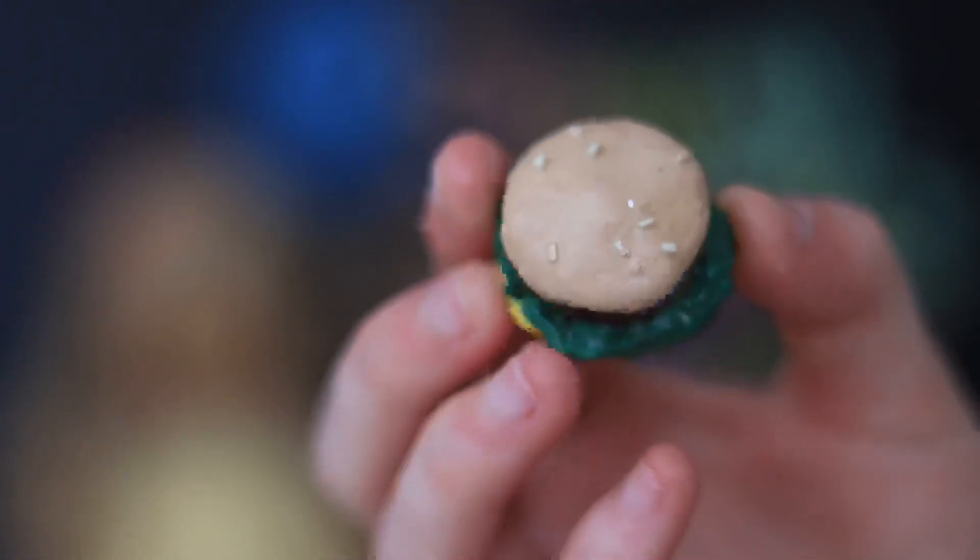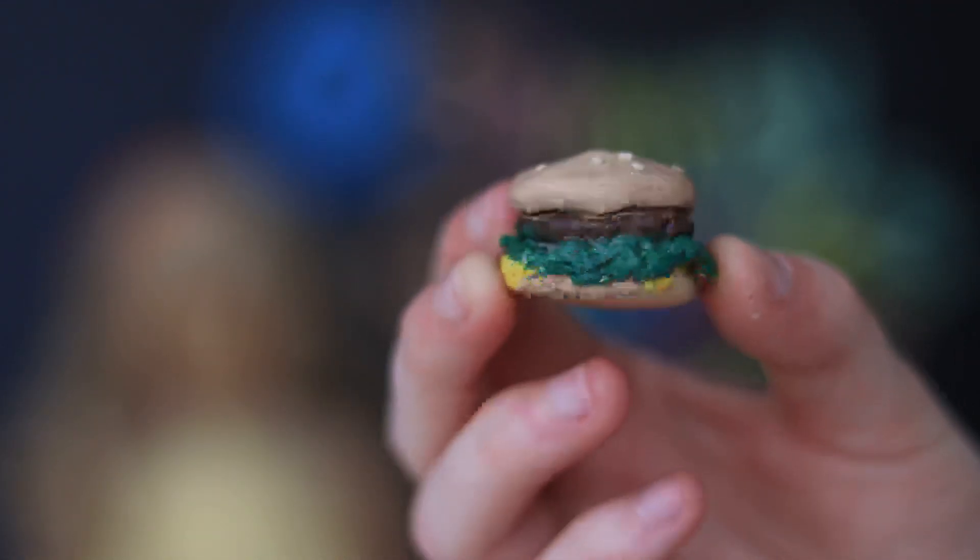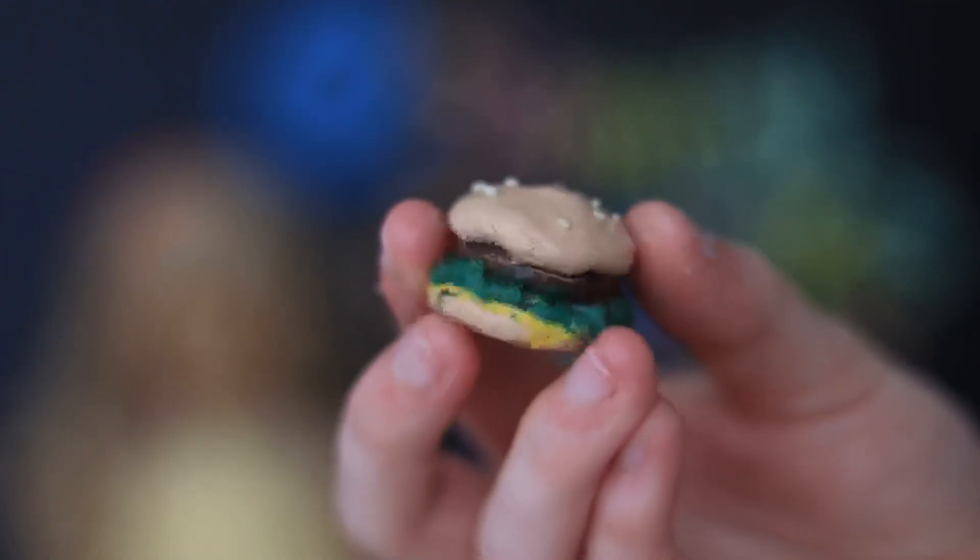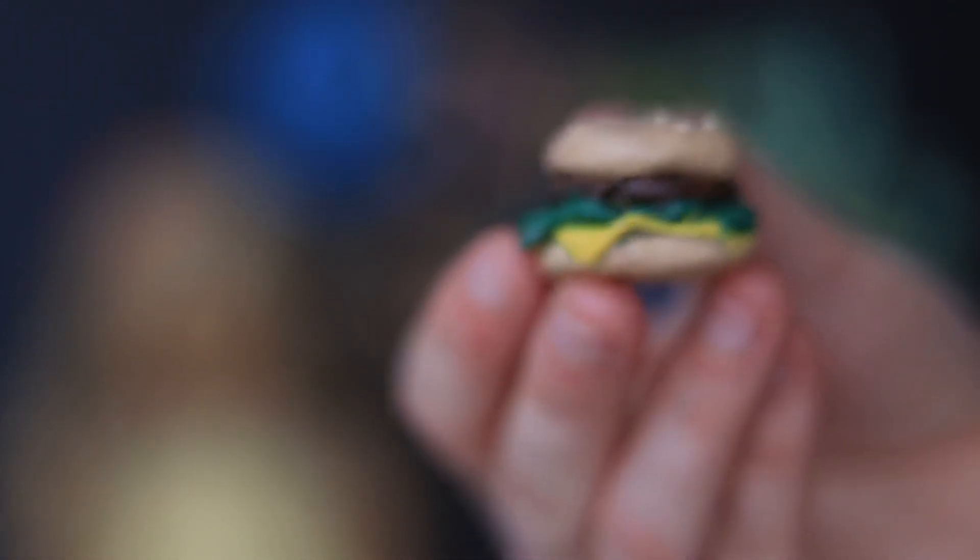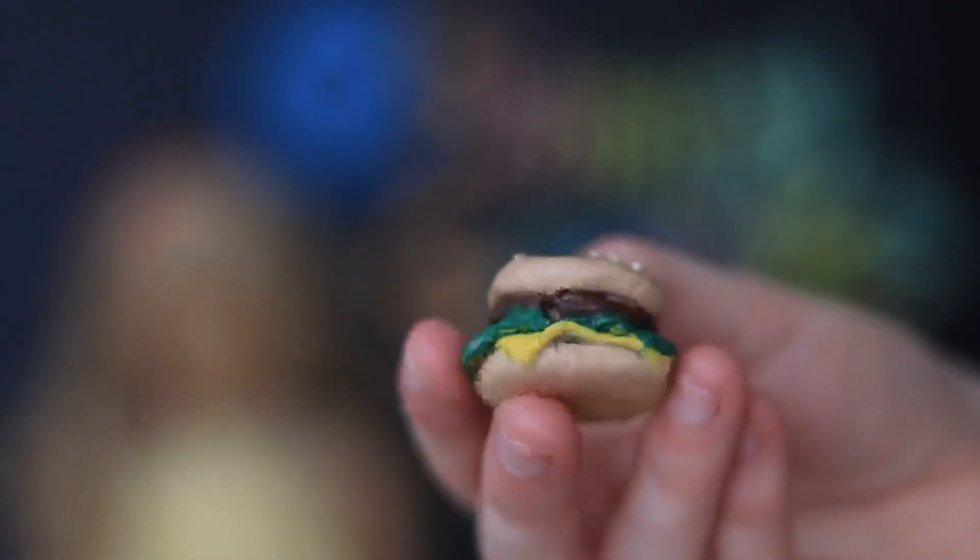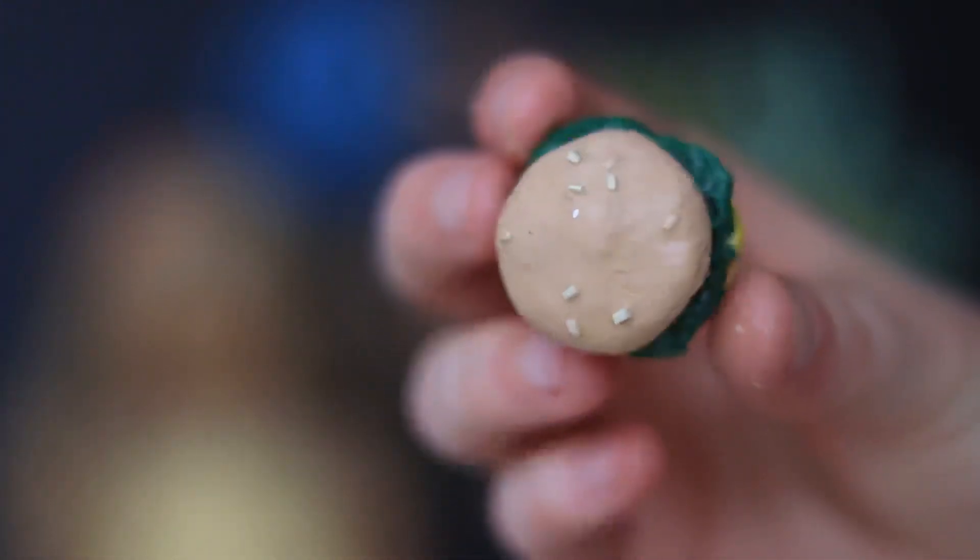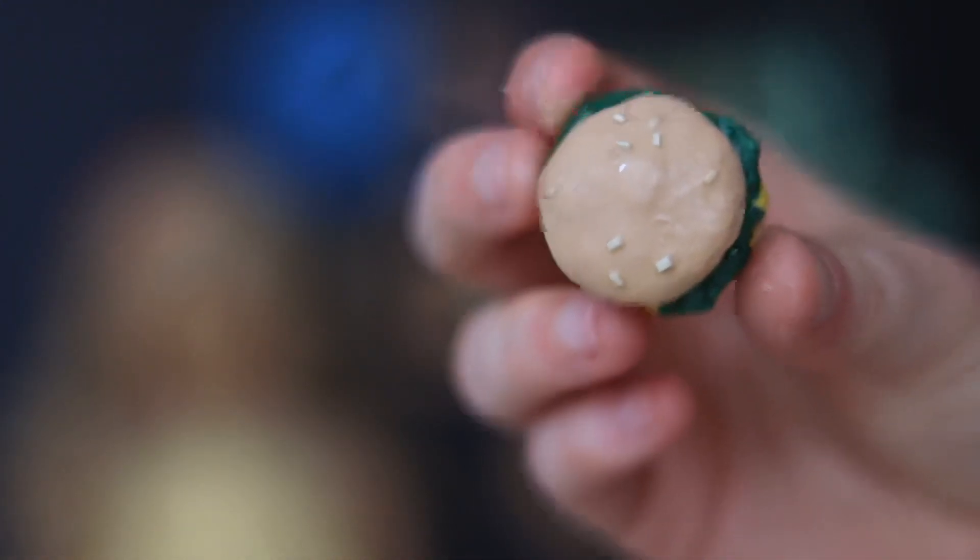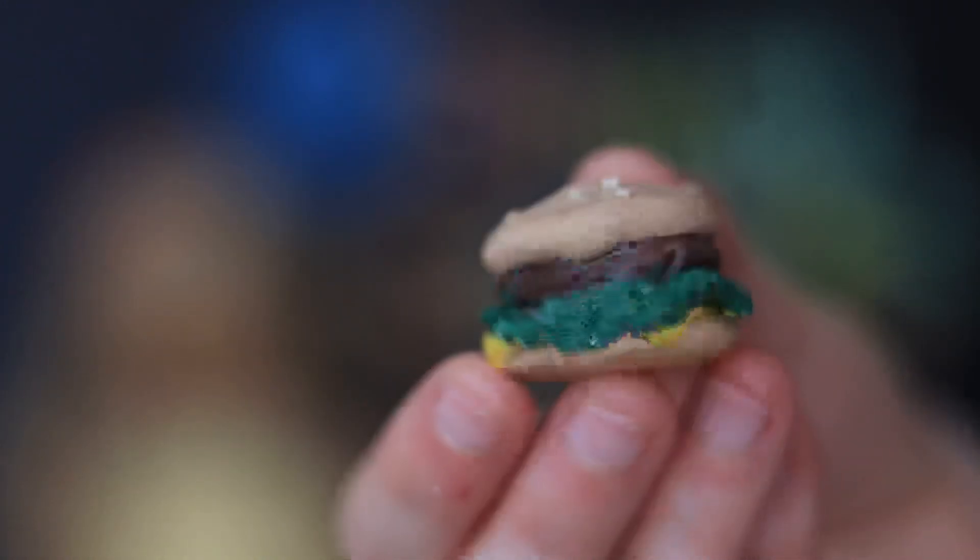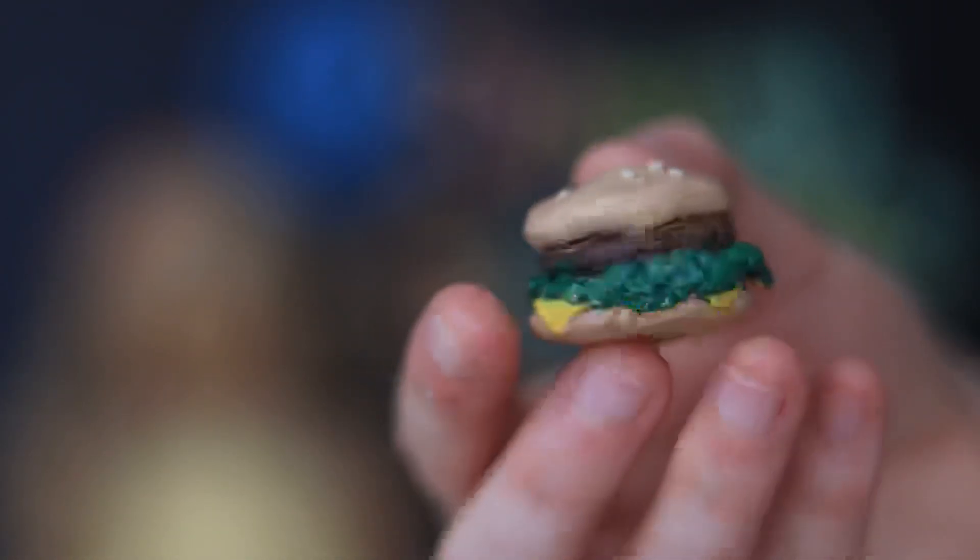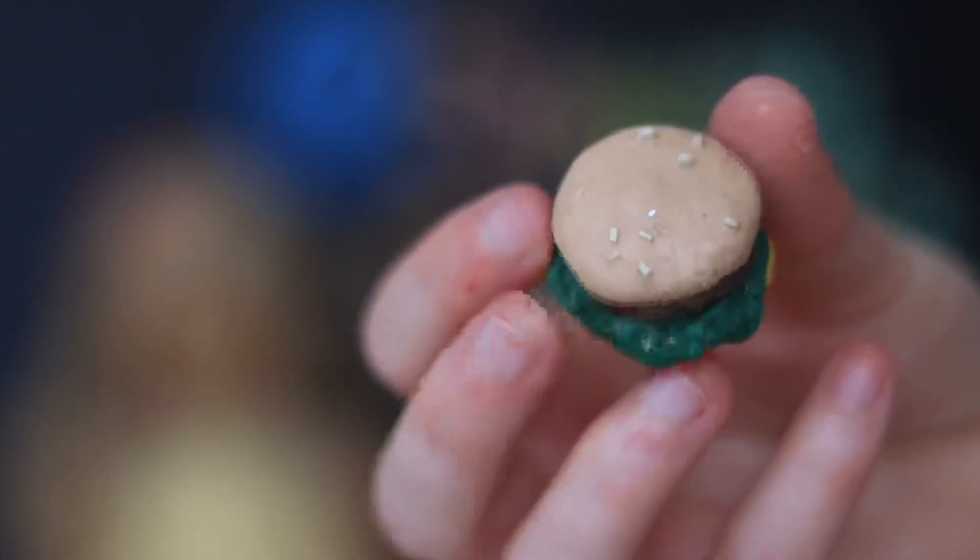She also makes these really cute, really realistic doll size hamburgers. Oh my goodness guys, this is so cute. Look at this cheese, the way it melts off the side of this. That's so cute. I love it. And there's even these little poppy seeds on top of the bun. I don't know how she makes this so realistic. Look at the lettuce guys. This is so cute. Yeah, 10 out of 10, would recommend.